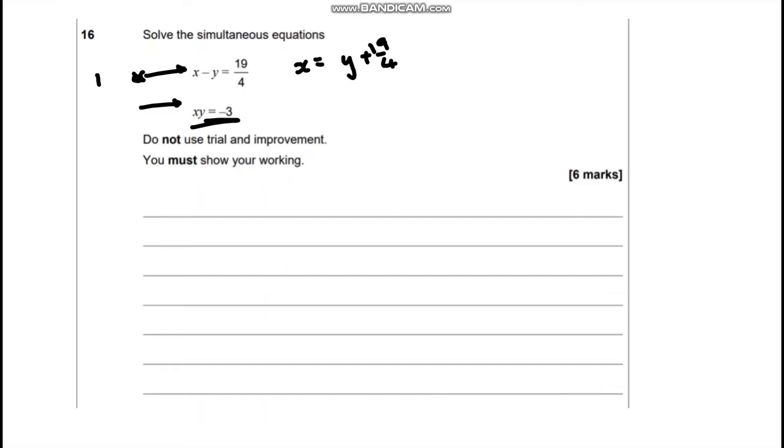So I'm going to substitute 1 into 2, and I'm just going to label it there so anyone reading my working knows exactly what I'm doing. We're going to end up with y times (y plus 19 over 4) and that equals negative 3.